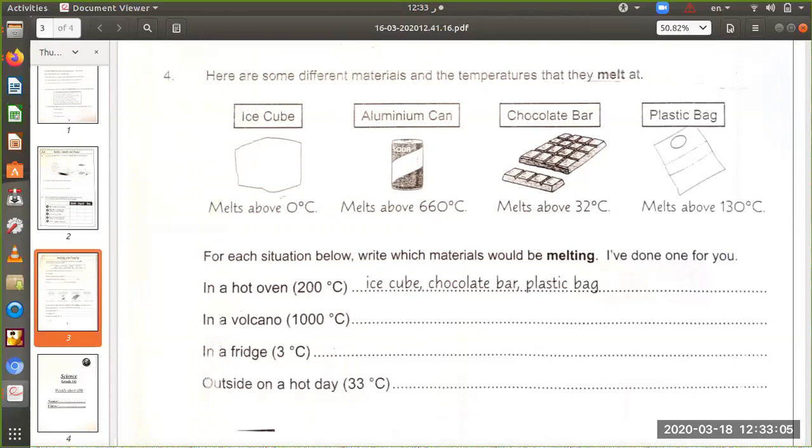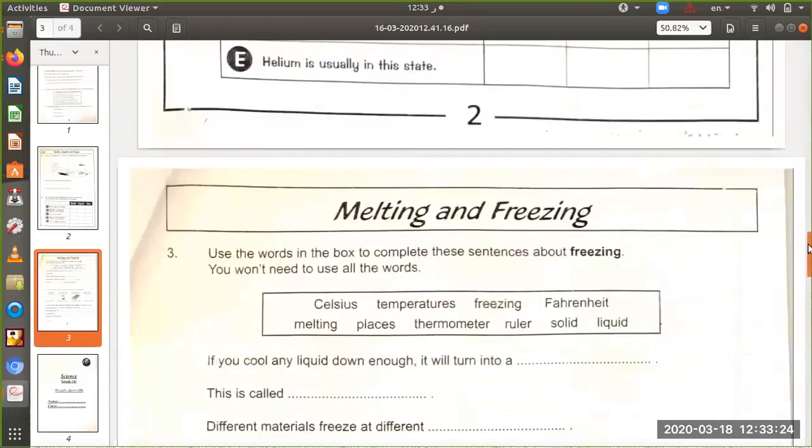In a fridge, 3 degrees Celsius, only the ice cube. Outside on a hot day, 33 degrees Celsius, the ice cube and the chocolate bar. Next page.